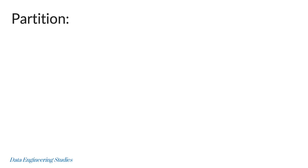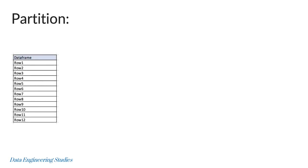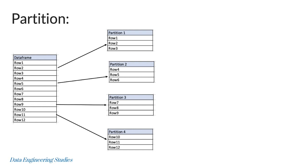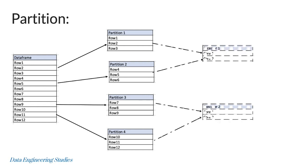Let's see a visual representation of partition. Let's take a DataFrame which has 12 rows. Partition is a subset of a DataFrame, so these 12 rows are getting partitioned into four partitions, each partition having three rows. Now if you are performing a task on each partition, each task will take place in one Spark core. In our example we have taken two executors each having two cores.